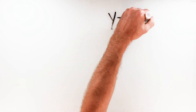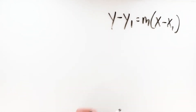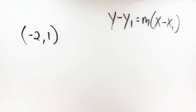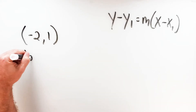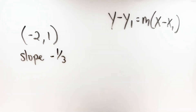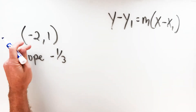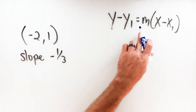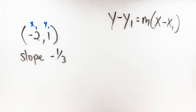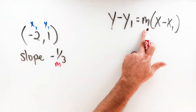So here's our first example. Let's say we want to write the equation of a line in point-slope form that passes through the point negative 2, 1, and has a slope of negative one-third. With point-slope form, I just need a point on the line and the slope — which I've just given you. I'm going to go to the point-slope form equation and plug in the information. The point negative 2, 1 gives us x1 and y1, and the slope negative one-third goes in the m spot.